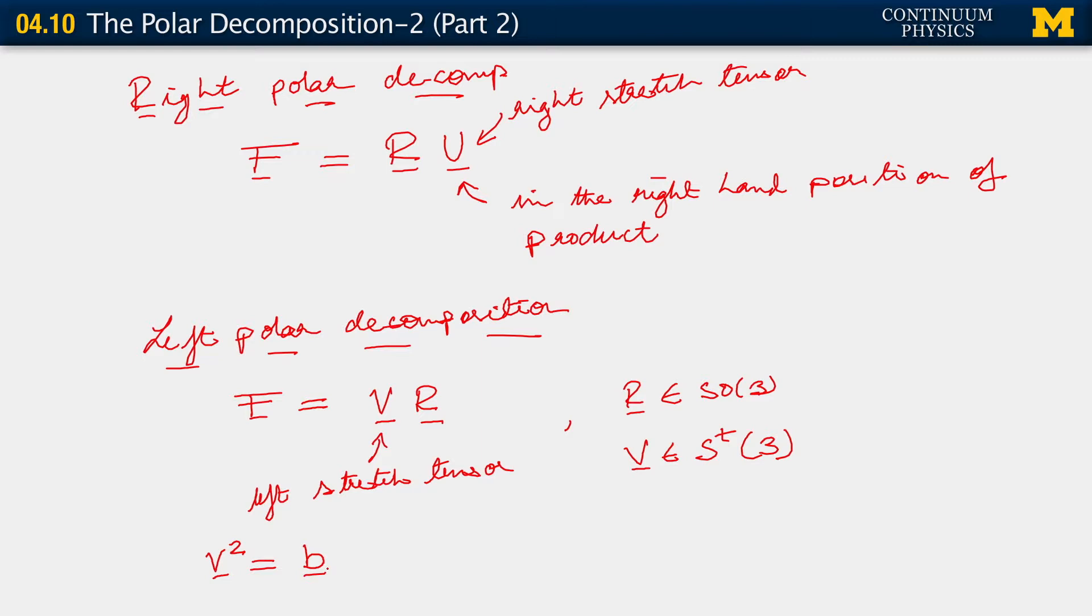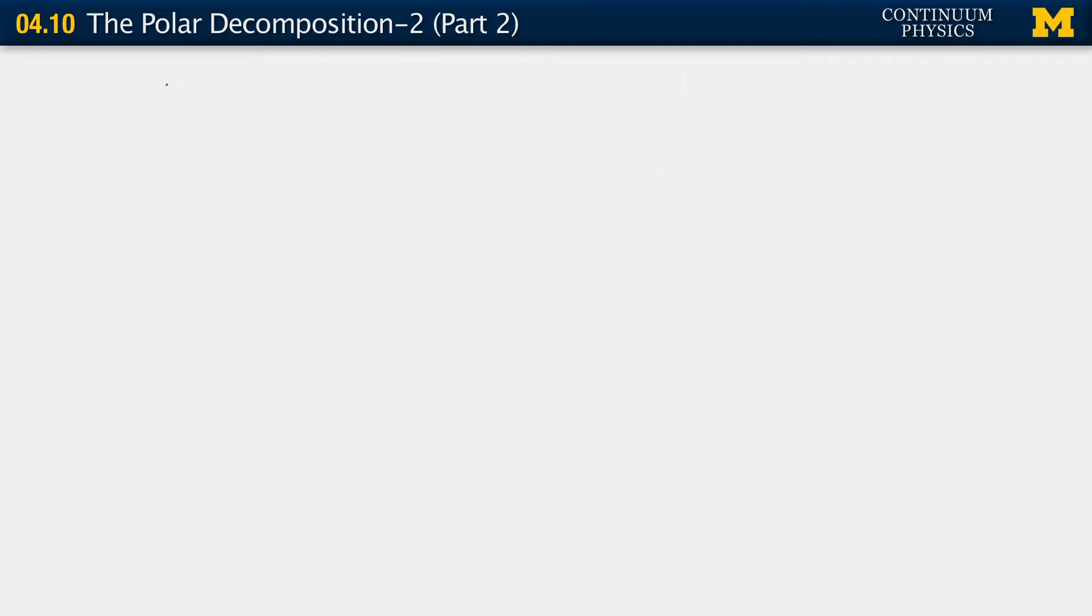So let me just rewrite that last line here. V square equals B, which has a form similar to C, but not quite the same. C was F transpose F. B is F F transpose.